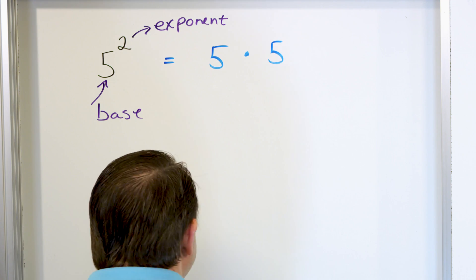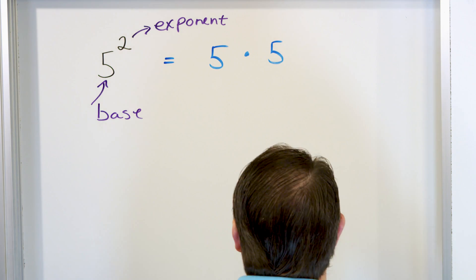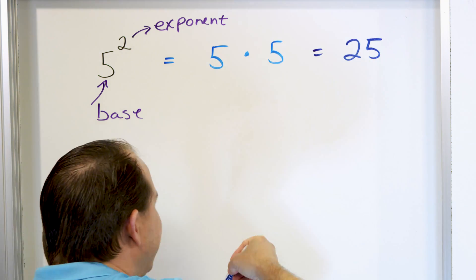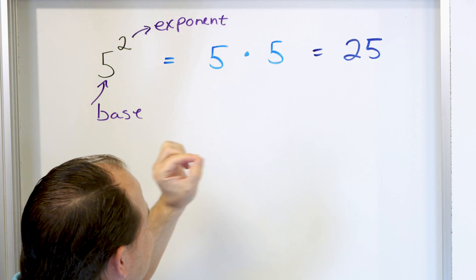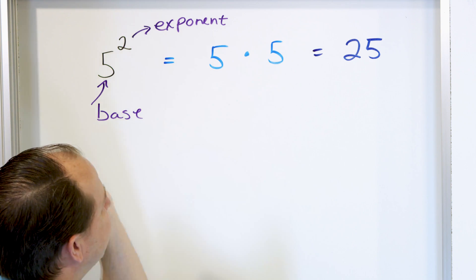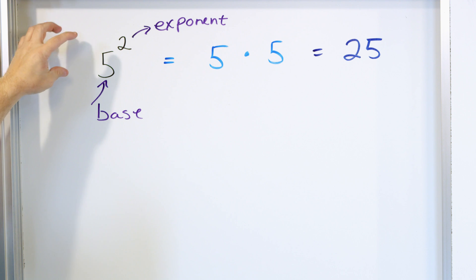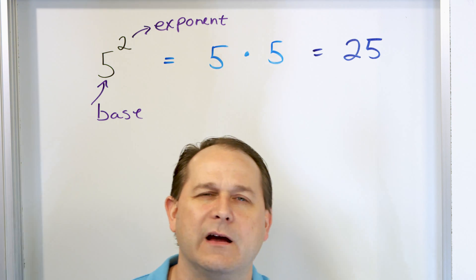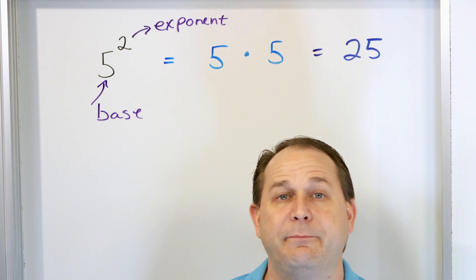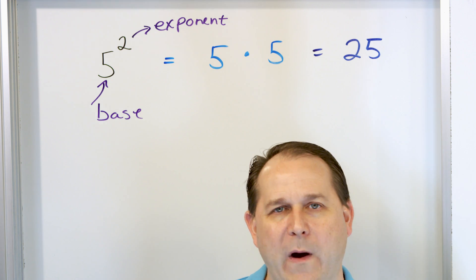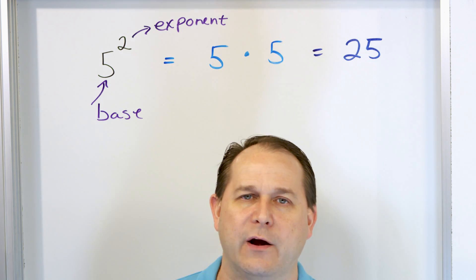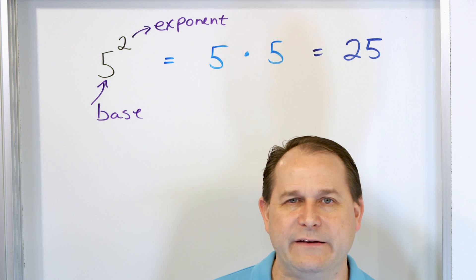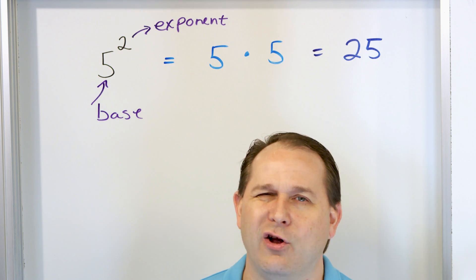You already know that five times five is equal to 25. So the number 25 is exactly equal to five times five, which is also exactly equal to five to the power of two. When we have a power of two, it comes up so much in math that we have a special name for it — we call it a square. So five squared, six squared, 10 squared, 17 squared — squared just means power of two.